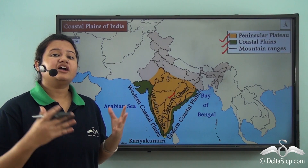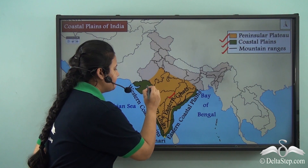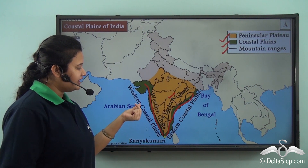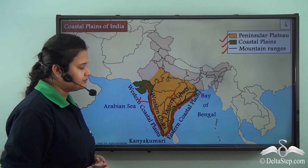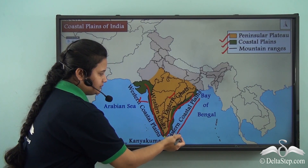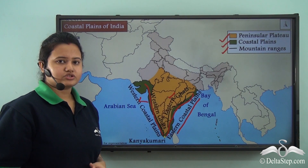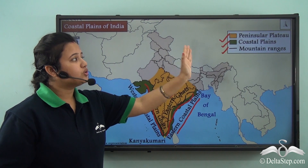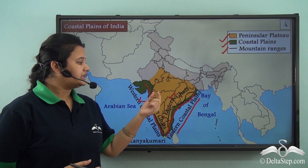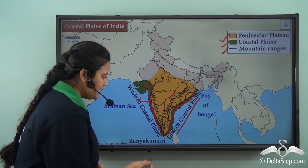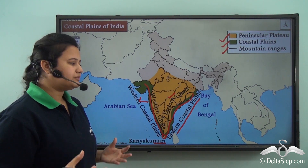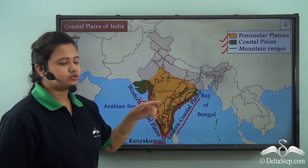These Coastal Plains are very long and they form the margin of the Indian Peninsula. The plain lying to the west of Western Ghats is known as Western Coastal Plain, and the plain lying to the east of Eastern Ghats is known as Eastern Coastal Plain. So, Western Coastal Plain and Eastern Coastal Plain comprise the entire Coastal Plains of India, and as we can see, it is very long. Also, the Eastern Coastal Plain and Western Coastal Plain meet at the southernmost tip of mainland India, that is Kanyakumari.